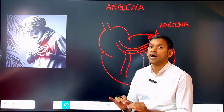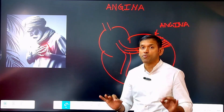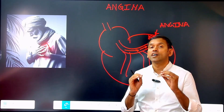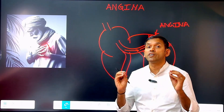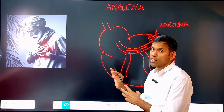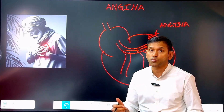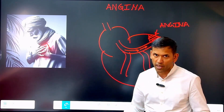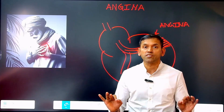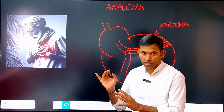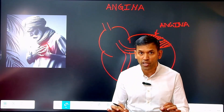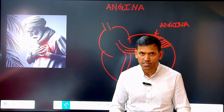To term a chest pain as angina, you should have specific documentation proving ischemia — it could be an ECG, a 24-hour ambulatory ECG, a stress test, or any other investigation that proves ischemia to the myocardium. If ischemia correlates with the chest pain, that is going to be called angina. So doctors, keep this in mind: every chest pain is not angina, and whenever you term it as angina, it should be documented with good evidence of ischemia. Thank you very much.